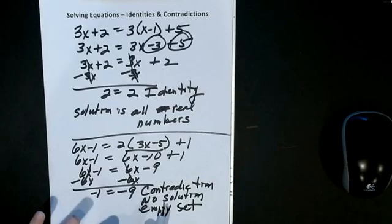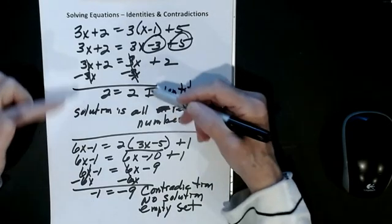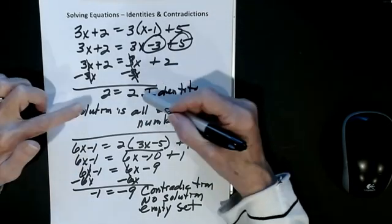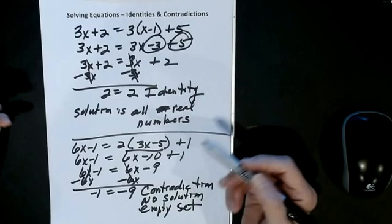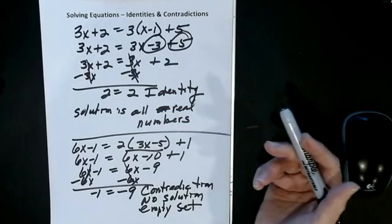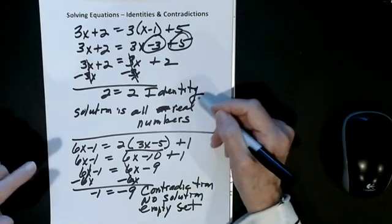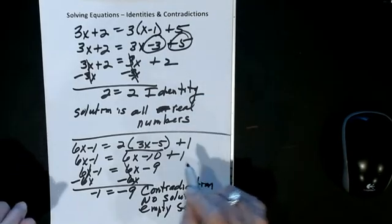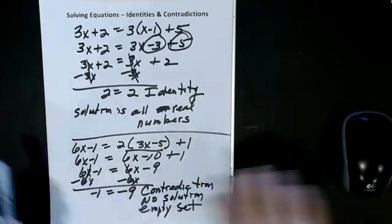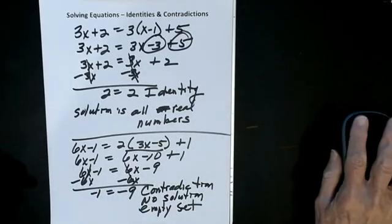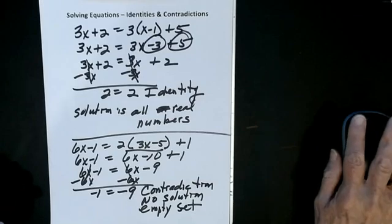So to summarize: when I have an impossible situation, it's a contradiction and the answer is no solution. When my x's cancel out and I have something like 2 equals 2 — a true statement — that's an identity and the solution is all real numbers.